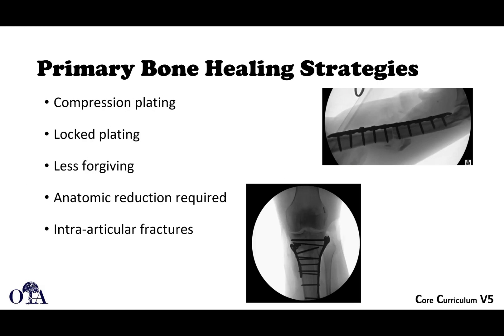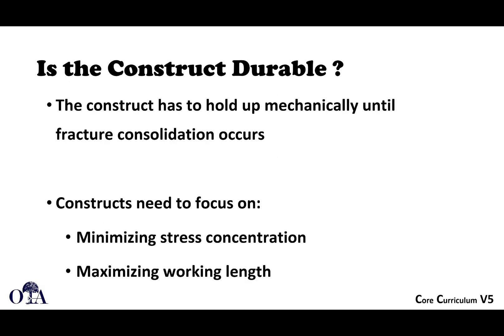The different ways you can potentially achieve primary bone healing are through compression plating, and this means you try to get anatomic reduction. You could use a locked plate when doing this — it depends on bone quality — but you still need to achieve compression to get primary bone healing and anatomic reduction. This is often done for intra-articular fractures where we need anatomic reduction anyway to achieve function, so in those cases we often will achieve primary bone healing.